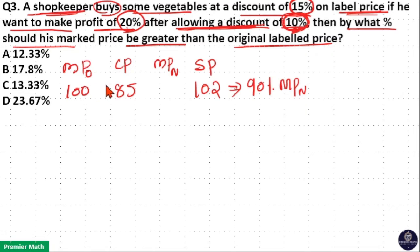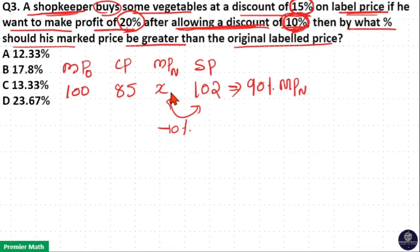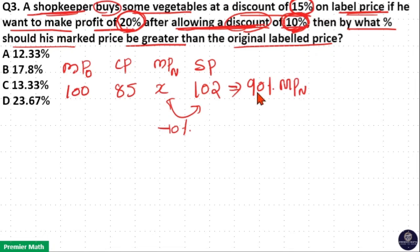After buying it at 85, he labeled this product at a new MRP and is giving a 10% discount on this new MRP. Then the selling price is 102 because he sold it at 20% profit. So this 102 is 90% of the new MRP.